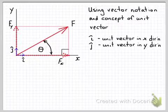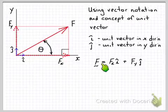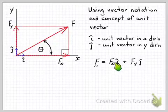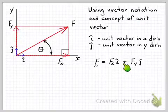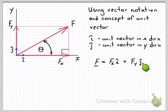Okay so then using that we can write the vector force F and we just need to note that it's a vector by this little squiggly line underneath. So that vector force F is equal to the magnitude of the x component times the i unit vector to indicate its direction in the x direction and the magnitude of the y component fy times the j unit vector to indicate its direction.